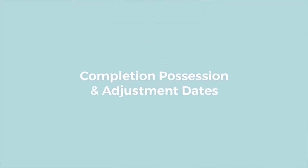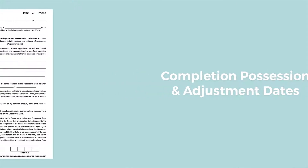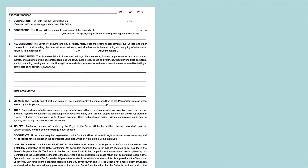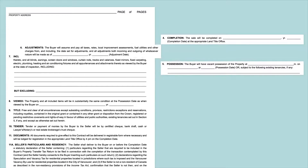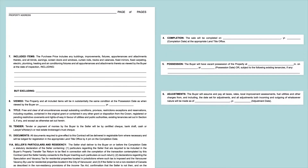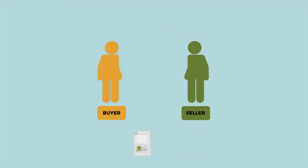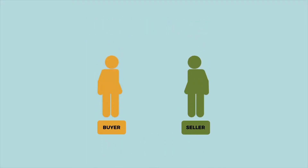Completion, Possession, and Adjustment Dates. These sections set out the timeline for the transaction. The key dates — completion, possession, and adjustment — are agreed to by the buyer and the seller when they enter into the contract of purchase and sale. Completion Date: the completion date is the date when the buyer's money is paid to the seller and the ownership of the property transfers to the buyer.